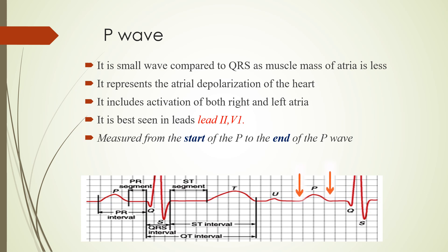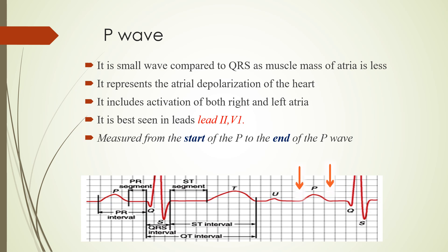The P wave is a small wave compared to the QRS complex. The reason is that the muscle mass of the atria is smaller than the ventricular mass. The P wave represents the atrial depolarization of the heart — so when the atria depolarize, they give rise to P waves. This includes activation of both the right as well as the left atria.